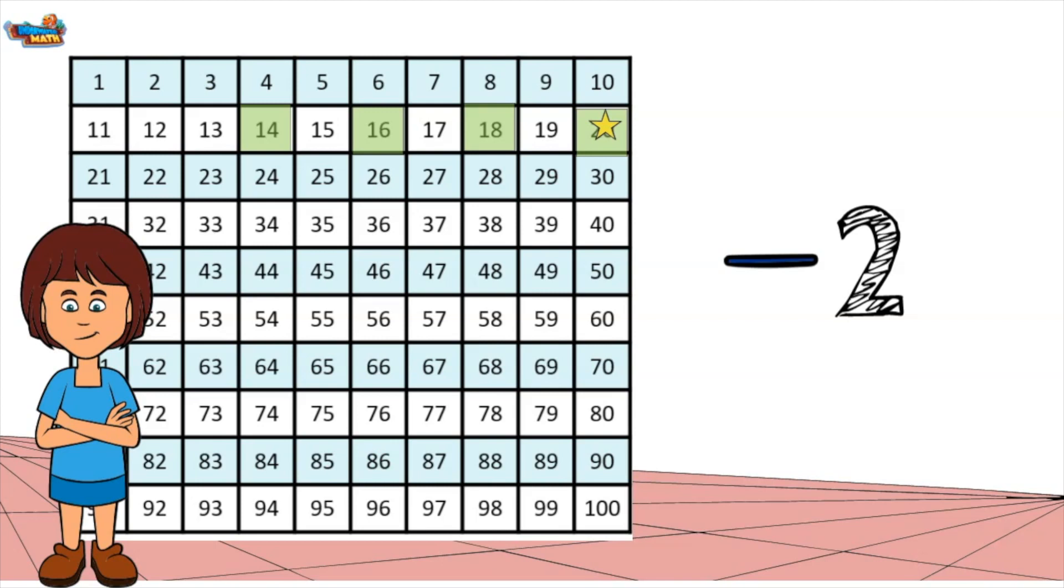To find the next number in the pattern, I must apply the rule minus 2. I start at the last number in the pattern 14 and subtract 2. I land on the number 12. The next number in the pattern is 12.